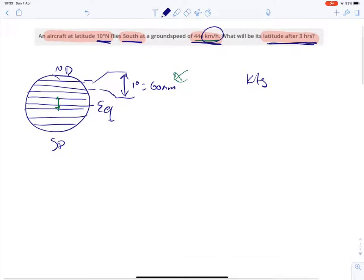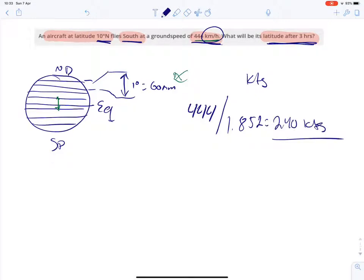So we do that by taking 444 kilometers per hour, divide that by 1.852 to get the speed in knots. So that would be 240 knots.